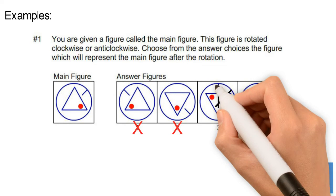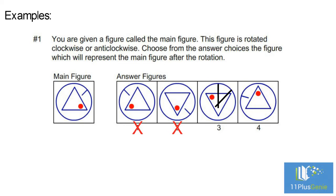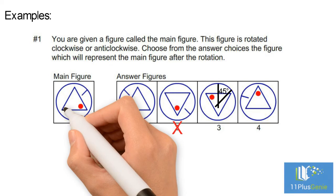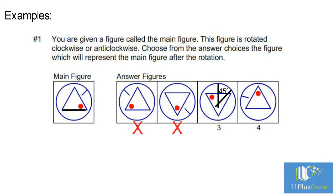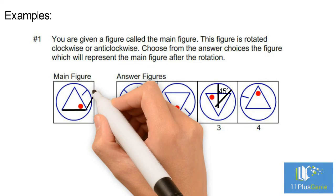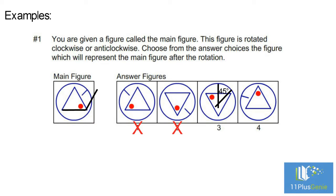In figure three, the line has rotated through 45 degrees anti-clockwise, but the base of the triangle has rotated 60 degrees clockwise and the dot is in the wrong position — eliminate figure three. The correct answer is figure four.